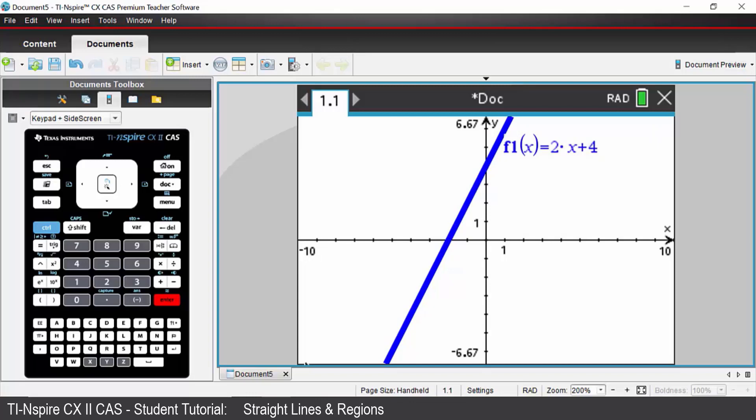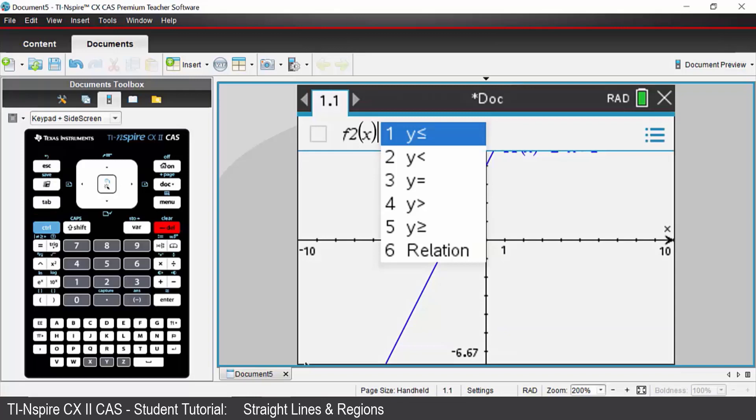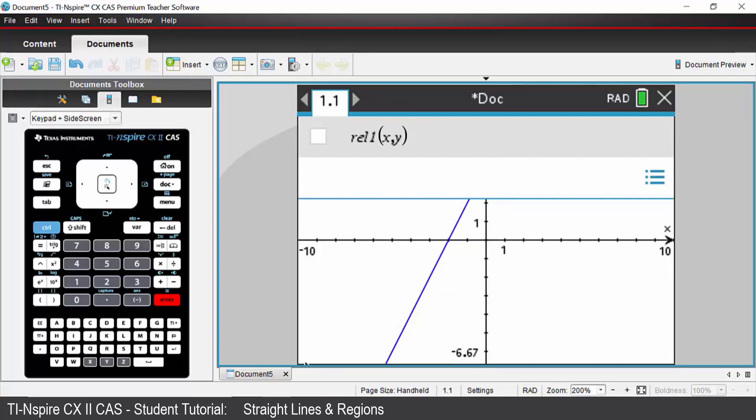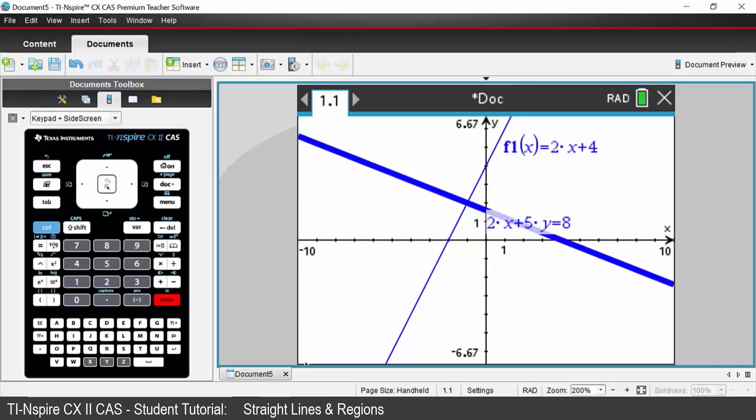Press tab and it will take you into a second entry line for a new equation. We're going to press the backspace key or the delete key on your keyboard, so press delete. Come down to option 6 which is relation this time, and we're going to enter the relation 2x plus 5y equals 8. A new straight line is drawn, but we entered it in relation form this time.